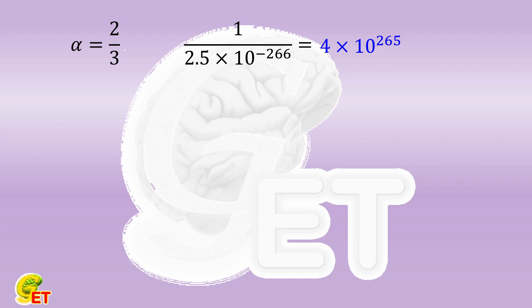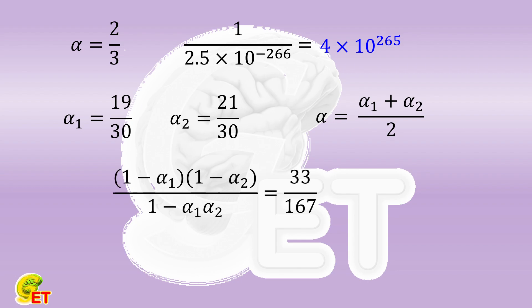If we slightly change the probabilities of both teams scoring a goal to α₁ equals 19/30 and α₂ equals 21/30, so that their arithmetic mean remains 2/3, the probability of a game ending in a draw then drops slightly to 33/167. The probability of having such a champion will further drop by another two orders.